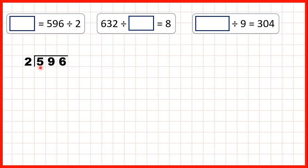So, we can use short division. 5 divided by 2 is 2 remainder 1. That's because 2 times 2 is 4, and then from 4 we need one more to get to 5.